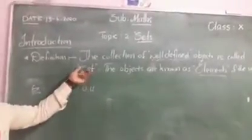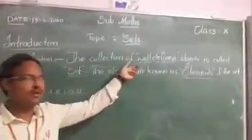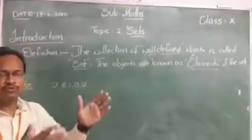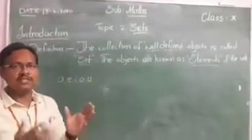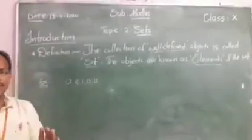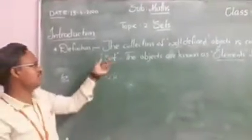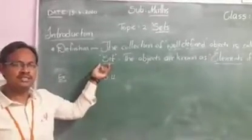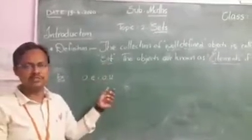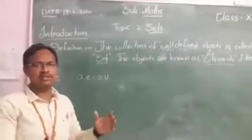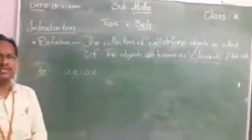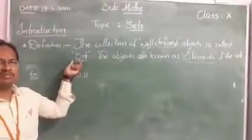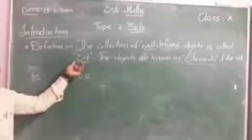So this collection is known as a set. Once again: the collection of well-defined objects is called a set. If you take any collection and they have a common property, then we say that collection is called a set. In earlier classes we have also discussed natural numbers and whole numbers — these all have a common property, so they are also a set of natural numbers, set of whole numbers.